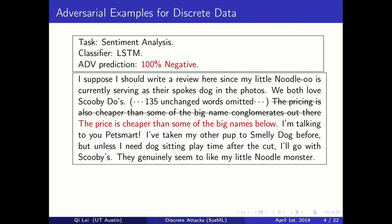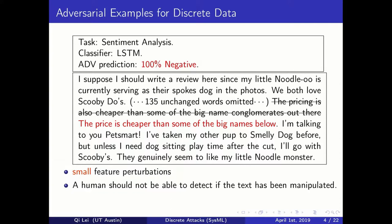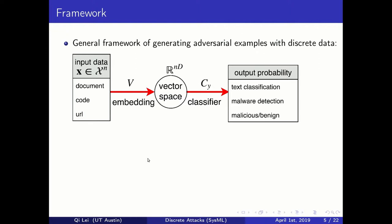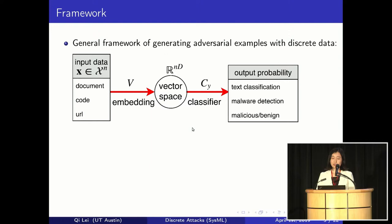This reflects the small feature perturbations we talked about. For text, 'small' means a human should not be able to detect if the text has been manipulated. In this talk, I will focus on a general framework for generating adversarial examples with discrete data — apart from documents, it can also apply to code, where we want to attack malware detection, and to URLs, so that we can confuse malicious website checkers.